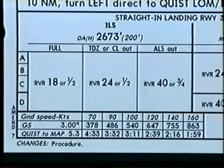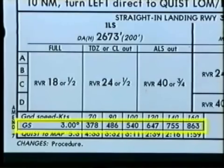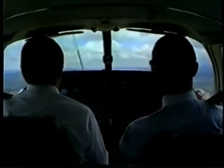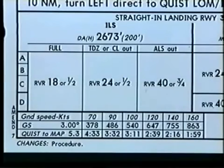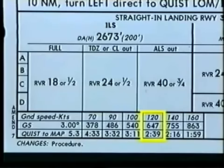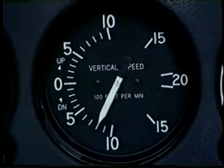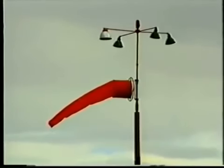Below the minimums box is a conversion table. For a precision approach, the middle row relates the aircraft's ground speed to the rate of descent necessary to maintain the glide slope. You can use this information to help determine the presence of a headwind or tailwind. For example, the table shows that at a ground speed of 120 knots, you must maintain a descent rate of approximately 647 feet per minute to stay on the glide slope. If you notice that a rate of 800 feet is required to remain on the glide path, a tailwind may be present. If your wind estimate varies markedly from the reported surface winds, be prepared for possible wind shear during the approach.